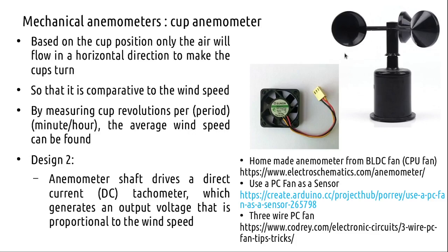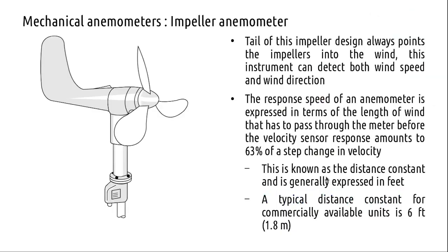The problem is that a BLDC fan would not rotate as freely as a dedicated anemometer, because it is designed to work as a fan and requires excitation. There is a hardware hack that allows you to remove some components to make it rotate more freely. The impeller type anemometer works on the same principle and also has a DC tachometer at its base, and it points in the direction of the wind.